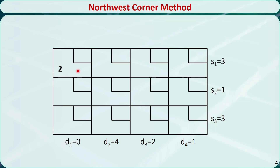In step 2, we need to cross out the row or column with zero supply or demand. In this case, only D1 is 0. We will cross out the first column and remove D1. Now we need to check step 3: do we have only one cell left? No, we still have many cells left. We need to go to step 1 and repeat the process.